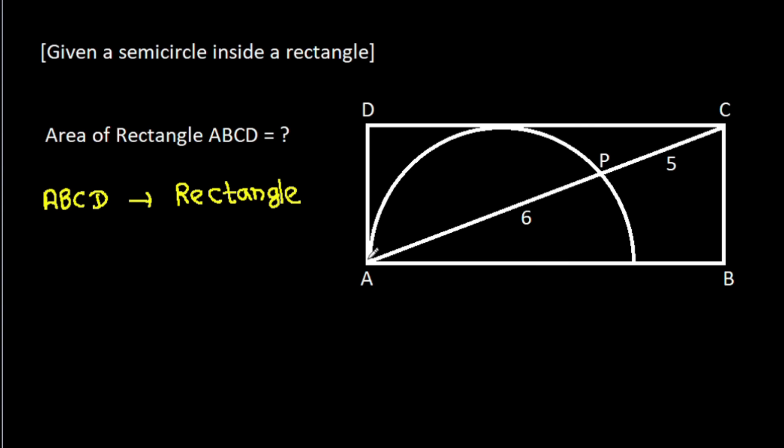That means these angles will be 90 degrees. Suppose the center of the circle is O, and suppose this point is Q and this point is M. Then AO will be equal to QO, which will be equal to MO, that will be the radius. Suppose X. AO is X, QO is X, and MO is X.